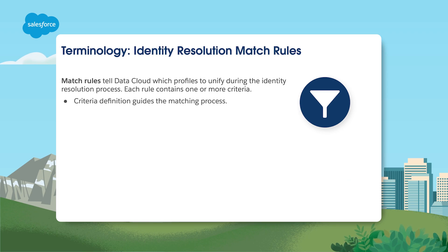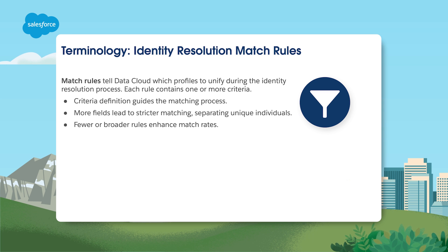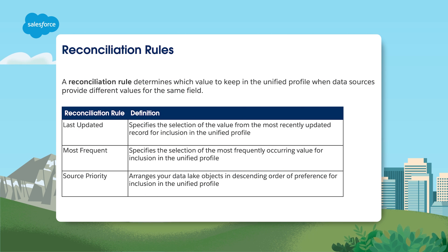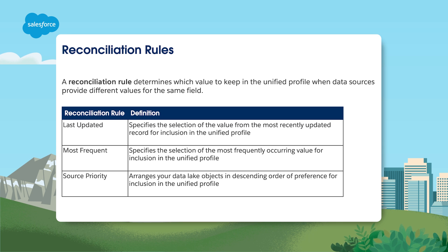How do you select the best data to include in your unified profiles? You establish the matching rules that set the criteria for determining which individuals should be linked to each other. When at least one match rule is true, two individual records are matched. Reconciliation rules resolve what value to use for those matched records when there are conflicts — for example, do you want the most recent, the most used, or something else?